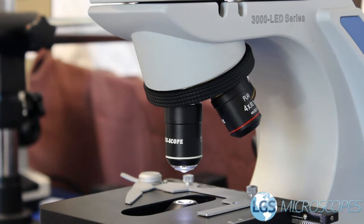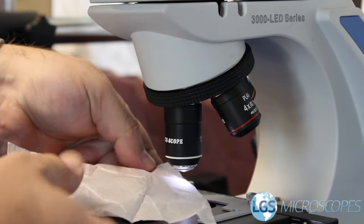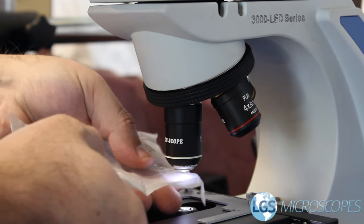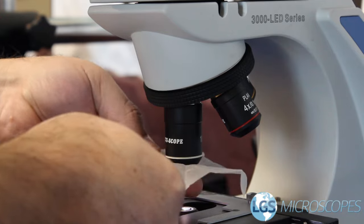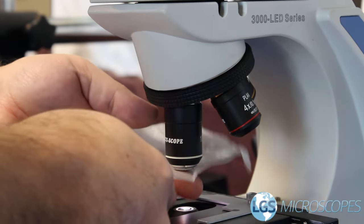Then you use this lens paper to dab off the oil from the 100x objective bit by bit, just going around the piece of paper, not wiping but dabbing, and keep going until there's no more oil coming off of the objective.